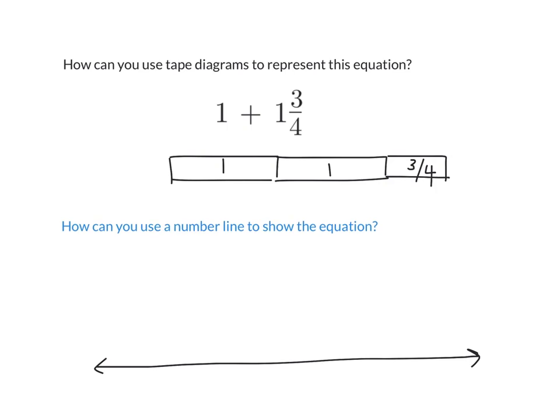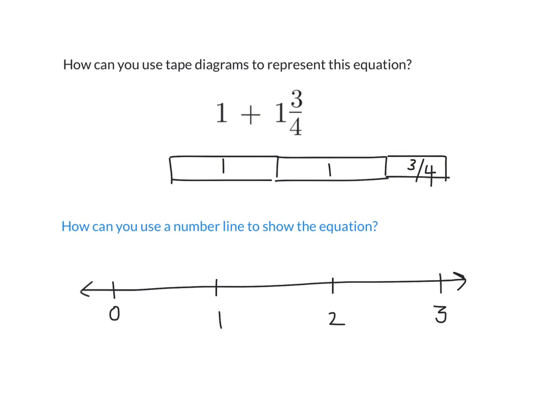Now we can also use a number line to show this equation. Remember, a number line is literally what it sounds like. It's a line that goes on forever and ever, and there's numbers on it. And we know that as we move towards the right on a number line, the numbers get greater. And as we move left, they get smaller. So let's say I have 0 here. Here's 1, here's 2, here's 3.